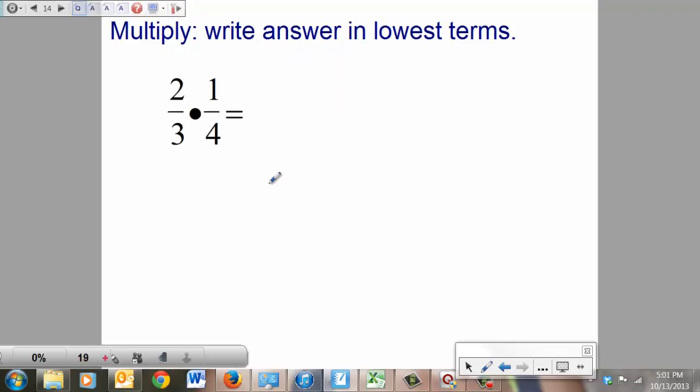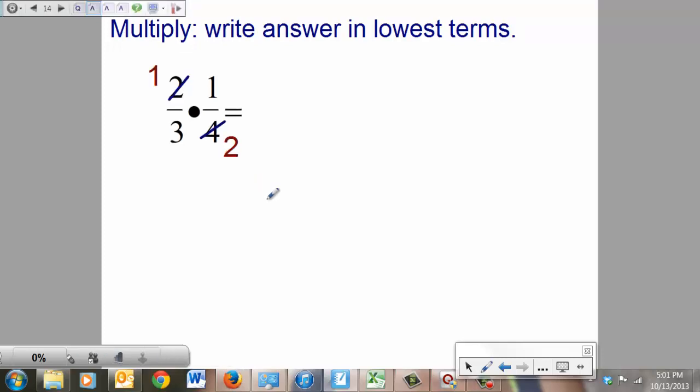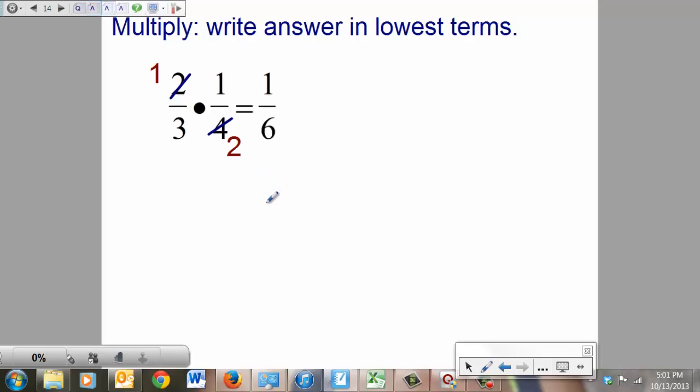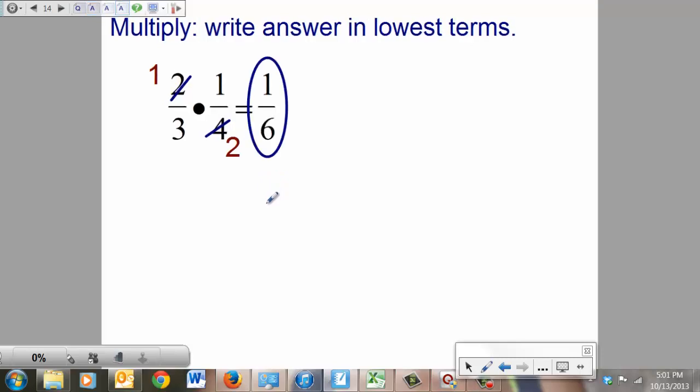Try that one out on your own. All right, the only thing you can simplify here is the 2 and the 4 becomes a 1 and a 2. Multiply it out. 1, 6. Circle your answer. This stuff's so easy.